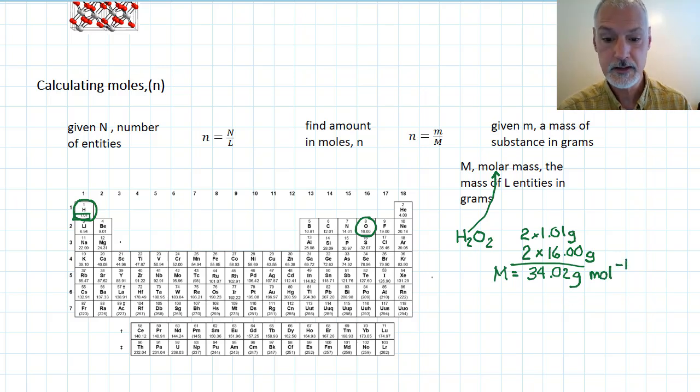So, to use this formula, let's say I was given 68 grams of hydrogen peroxide. And I would like to know how many moles that is. Well, I know one mole weighs approximately 34 grams. So, as a result, I have approximately 2 moles of hydrogen peroxide present in 68 grams.